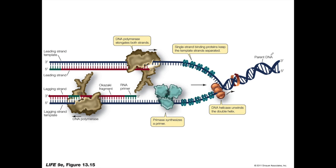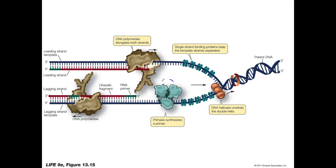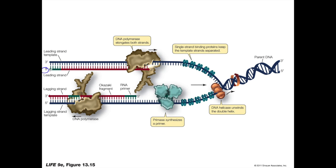Putting it all together so far: you have your old DNA double helix. Helicase opens it up, creating the replication fork and replication bubble. Single-strand binding proteins keep it single-stranded. Topoisomerase corrects the overwinding ahead of the replication fork. Then primase adds a little piece of RNA called the primer — here shown in green, while dark blue is old DNA. Then DNA polymerase III adds a new stretch of DNA shown in red, growing from 5' to 3'.